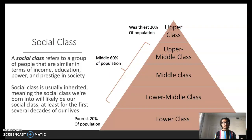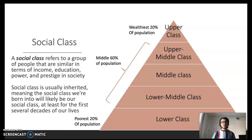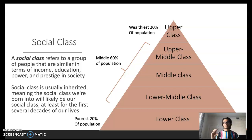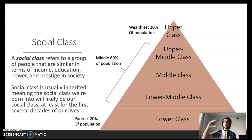When we're talking about social classes, we're referring to groups of people that are similar in terms of income, education, power, and prestige in any given society. In the United States, we generally organize people into five tiers, each representing 20% of our overall population. The poorest 20% is referred to as the lower class, then the lower middle class, the middle class, the upper middle class, and the wealthiest 20% is largely referred to as the upper class.